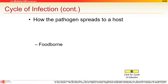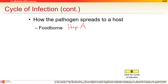Disease can spread from hosts via foodborne routes — hepatitis A is waterborne/fecal contamination. Restaurants with foods that aren't cooked properly can transmit hepatitis A. Hepatitis B, C, and D are bloodborne.